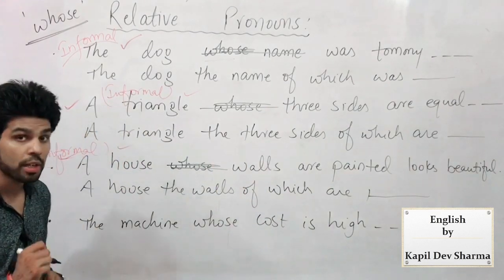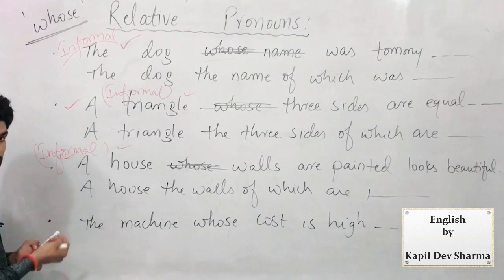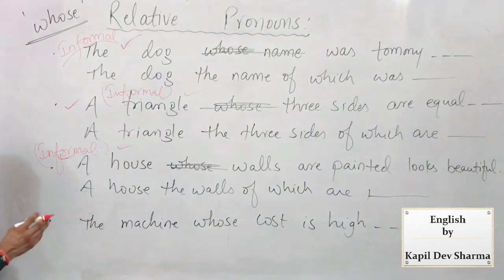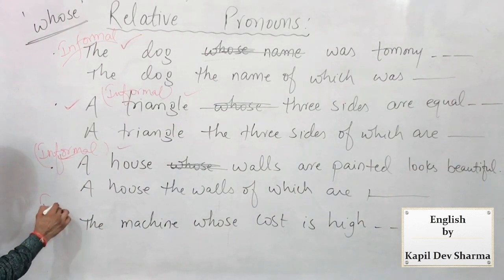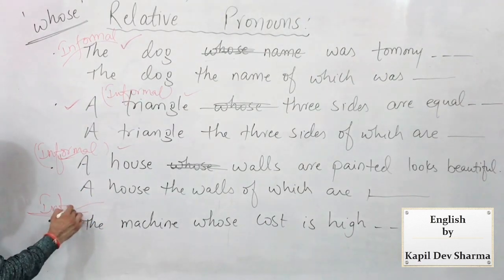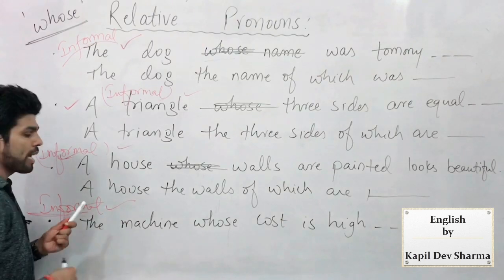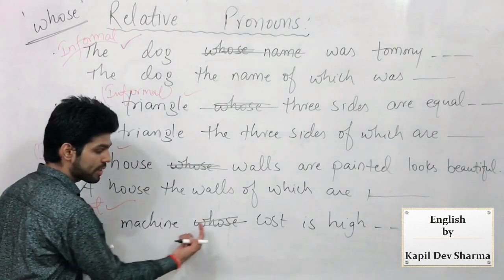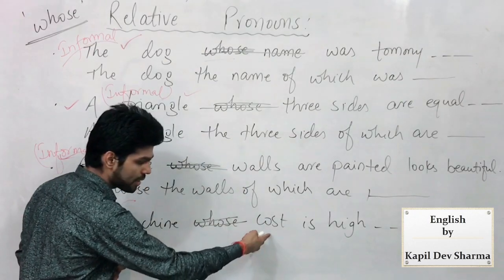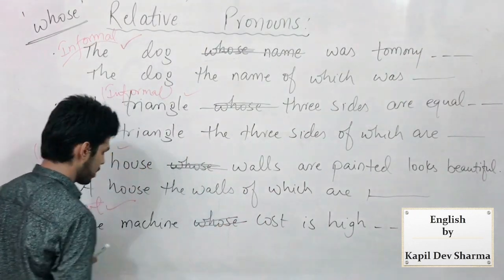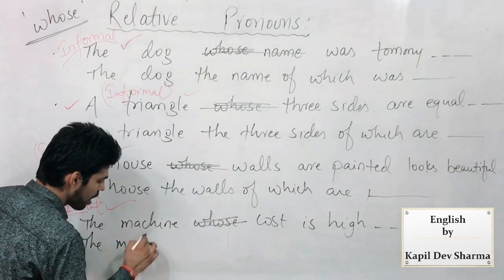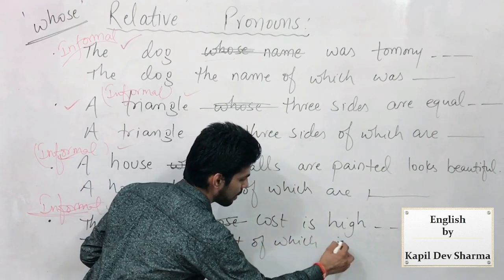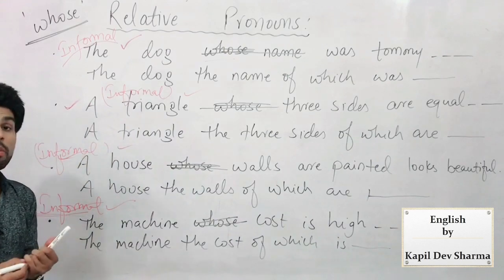I hope it is clear — if not, please listen again. One more example: 'The machine whose cost is high' — voh machine jiski cost mehngi hai. Again the same terms — in informal language this is correct. But in written formal/exam English, 'whose' for machine is wrong — machine is an object, non-living, 'who' doesn't come with non-livings. So turning it around: 'whose cost' → 'the cost of which.' I repeat: 'The machine the cost of which is high.'